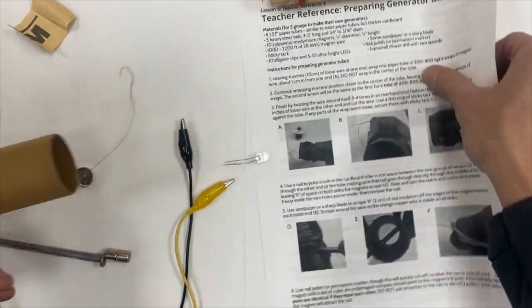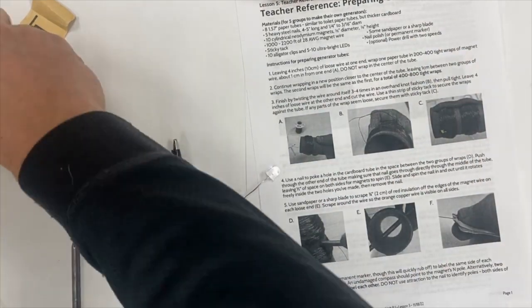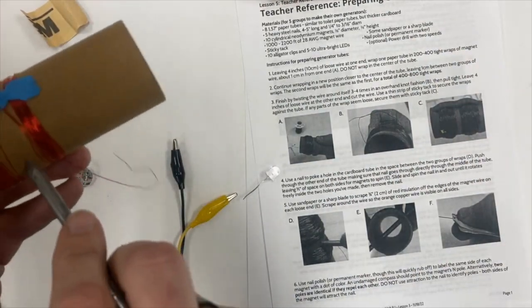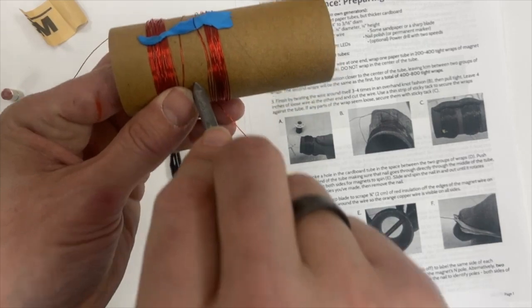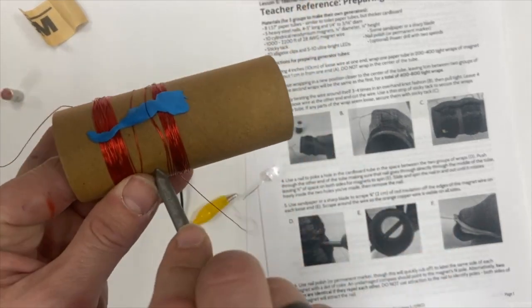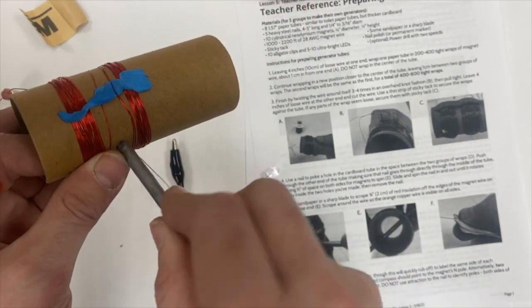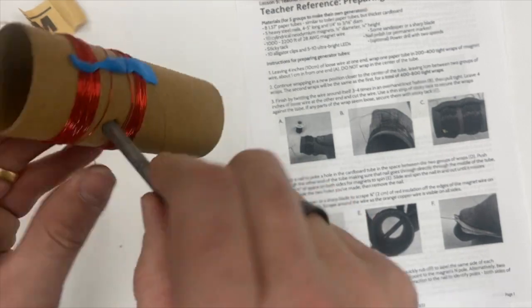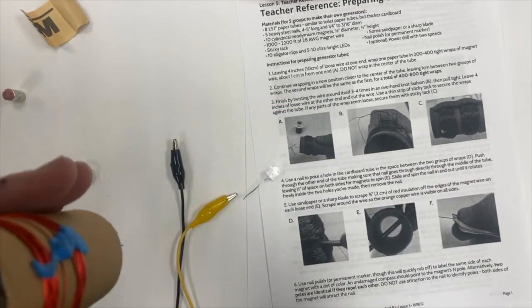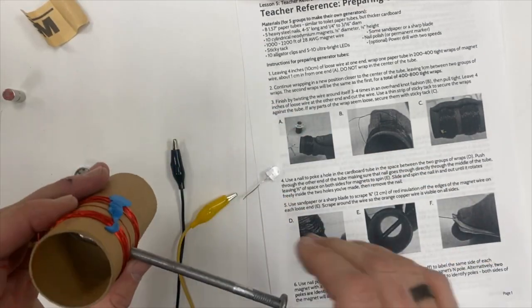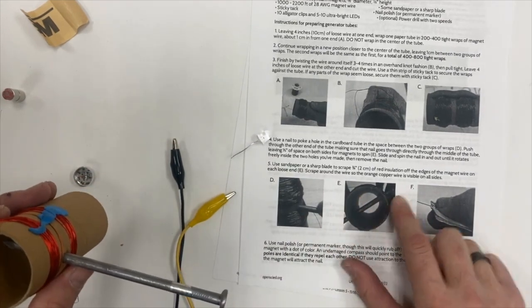Once I have those wraps, I'm going to take this nail and I'm going to poke it through the center of the two wraps. I'm going to try my best to get it close. Don't poke your finger, but the nice thing about using cardboard here is you can poke through it easily.